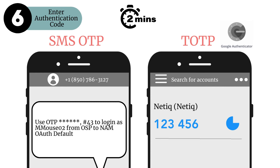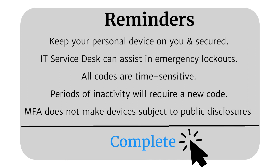If you have enabled the SMS OTP method, you'll enter the code from the text message you receive. With the TOTP method, you'll look in your authenticator app and enter the code provided. For security purposes, these codes are time-sensitive and a new code will need to be requested if not entered promptly. Please remember to keep your personal device on you and secure. The IT service desk will not be able to respond immediately to requests for lost personal devices, but they can assist in emergency lockout situations.